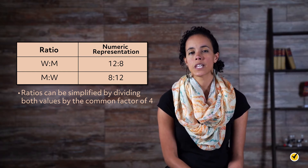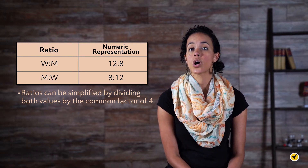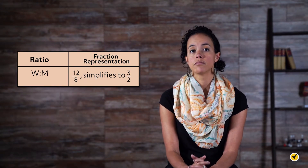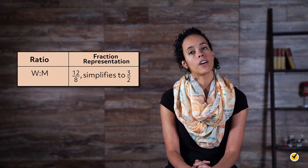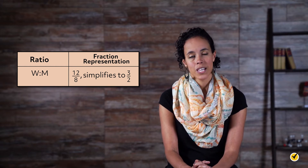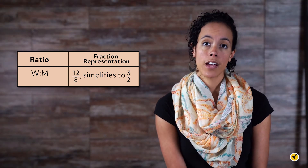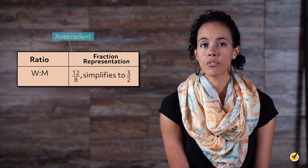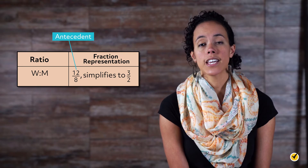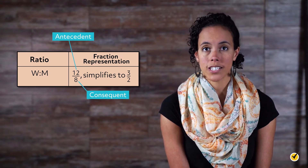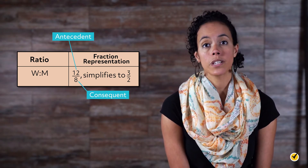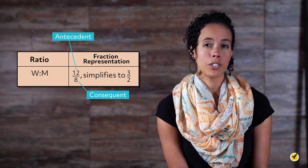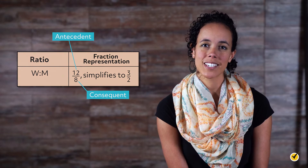There are two ways that ratios can be written. This example uses a colon, but you could also use a division bar to form a fraction. 12 over 8 simplifies to 3 over 2. It is very important to note that the order of the categories matters when building a ratio. The first value is technically referred to as the antecedent, and the second value is referred to as the consequent. The antecedent is always compared to the consequent. Interpreting the ratio in context can sometimes be tricky, but becomes easier with practice.